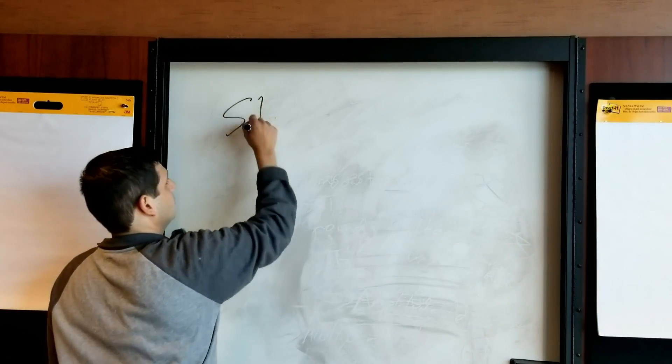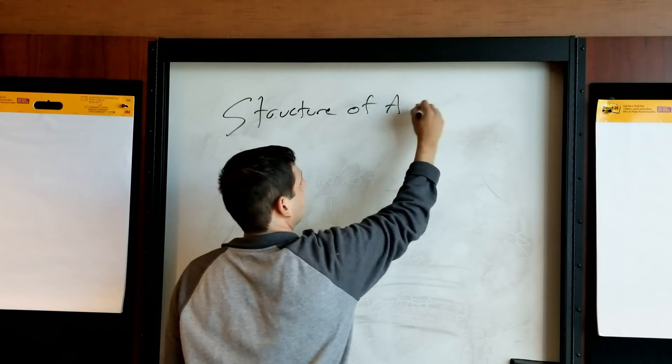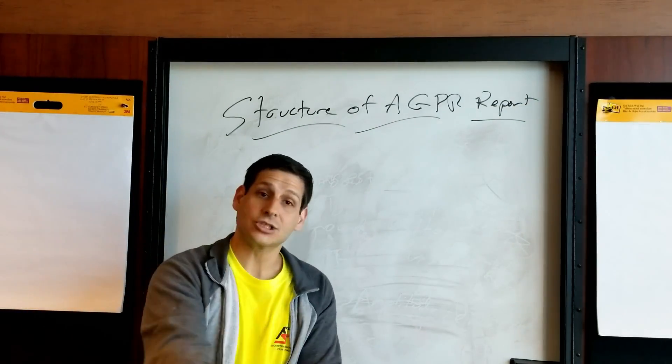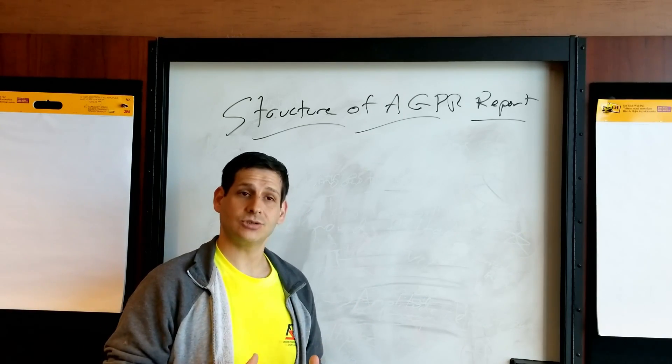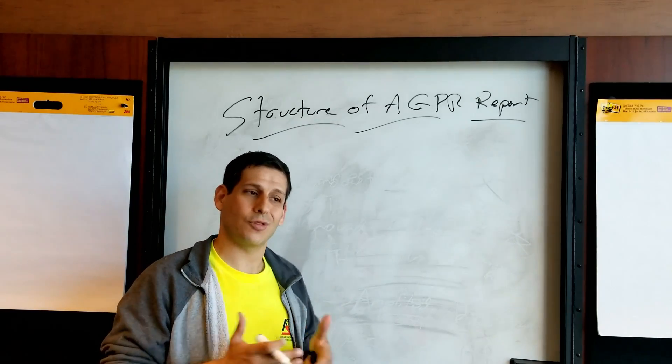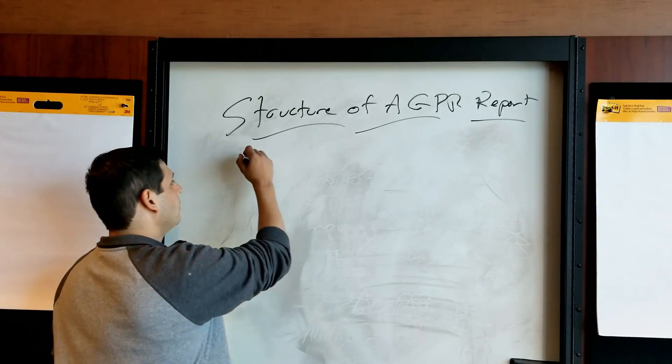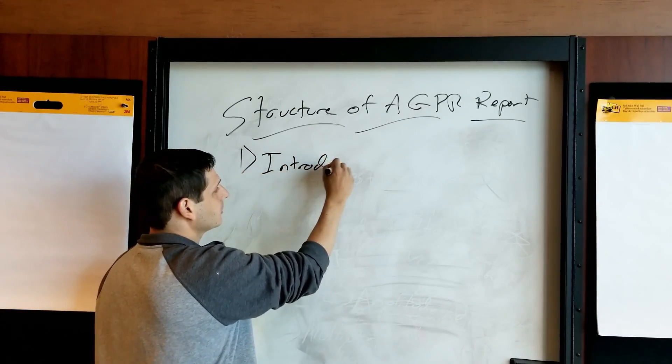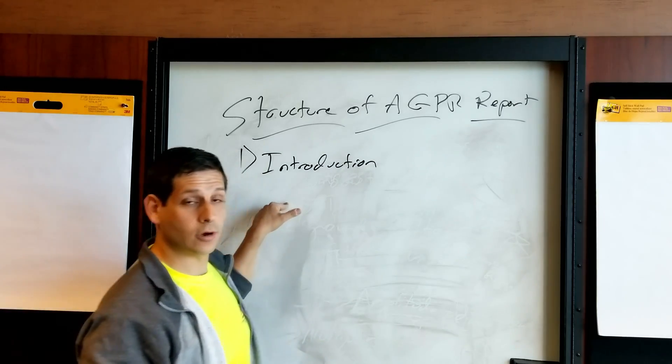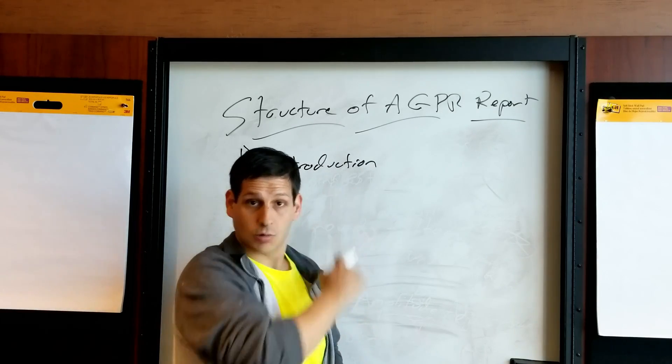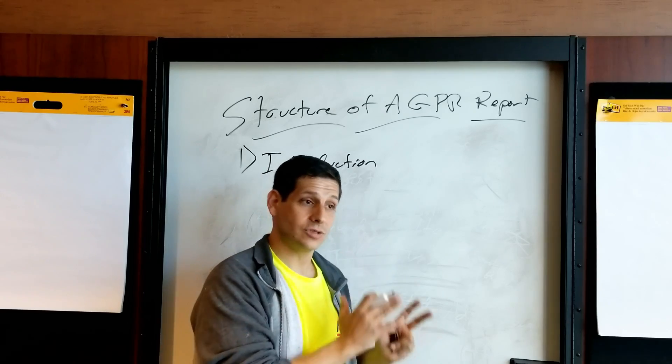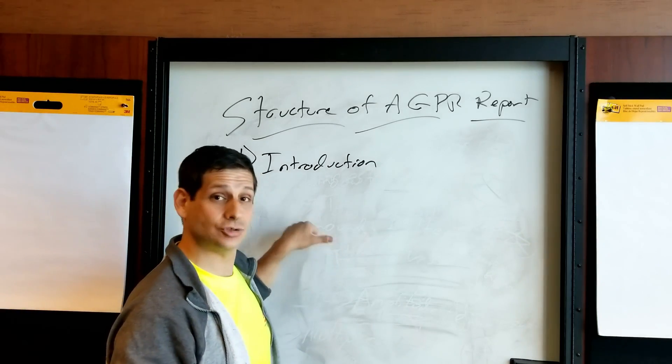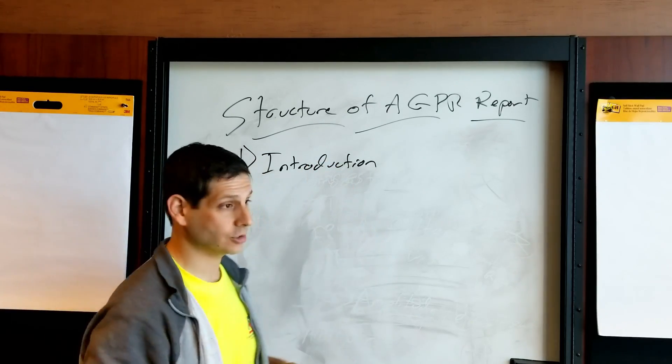What should be in there? What are the different sections that should be in a GPR report? And I give you five sections that are absolutely necessary in any GPR report. I'll go over what those sections are now. So structure of a GPR report, there are five sections that have to be in there. Even if you don't have headings for the sections, here's the flow of what your report should look like.